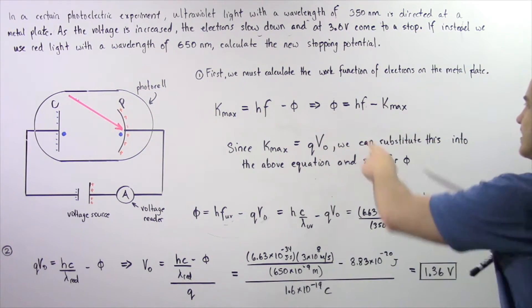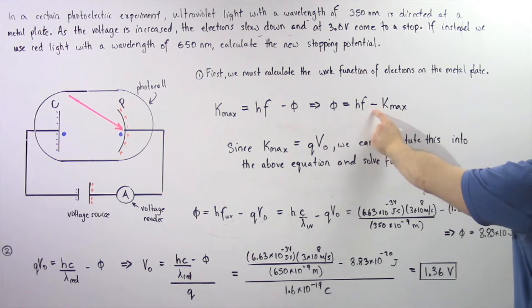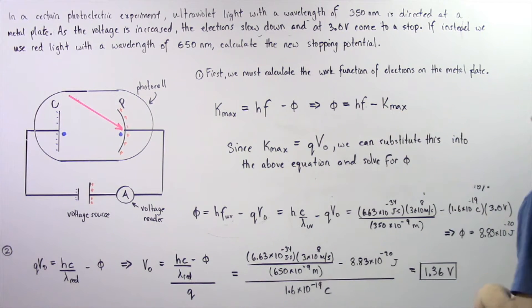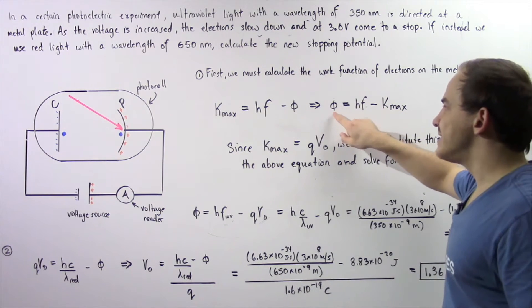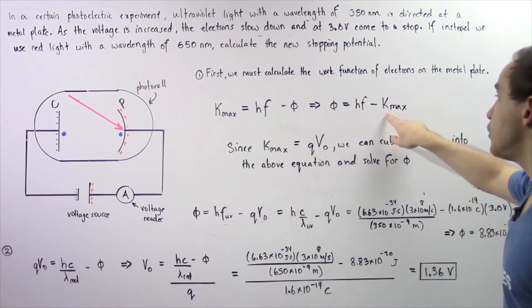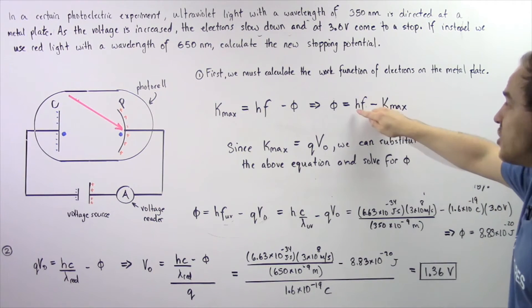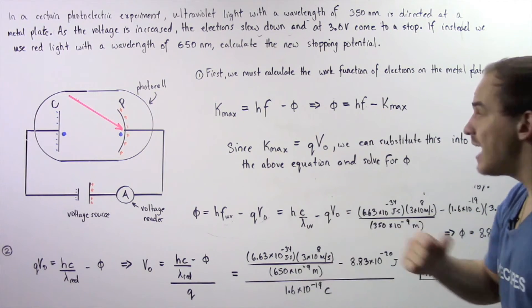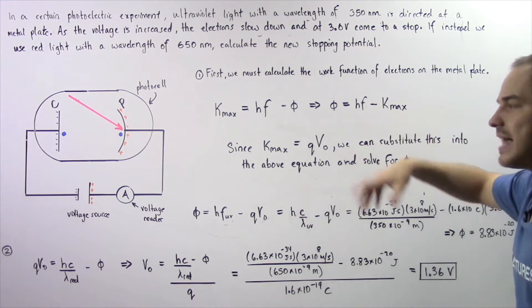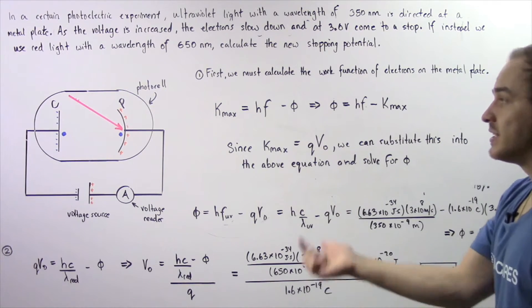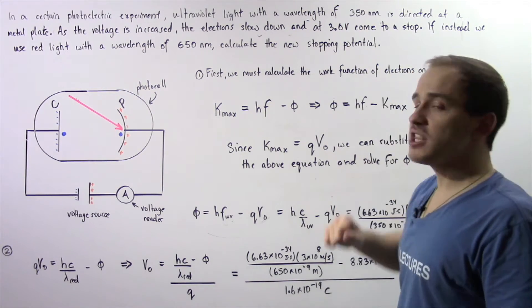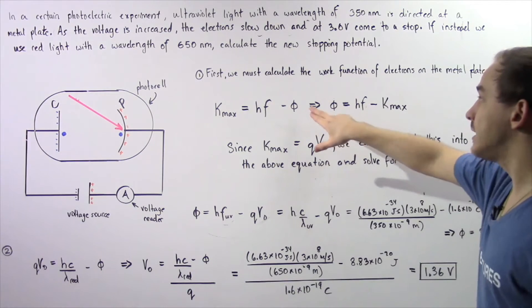So the work function is equal to HF minus the maximum kinetic energy. So basically, to calculate what phi is, we have to know what the maximum kinetic energy is. We know what H is, it's Planck's constant. We know what F is, that's the frequency of light, and we can calculate that by using the wavelength. So to calculate phi, we have to calculate what the maximum kinetic energy is.